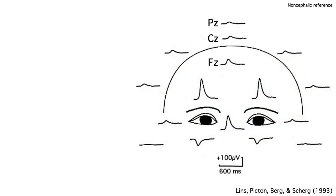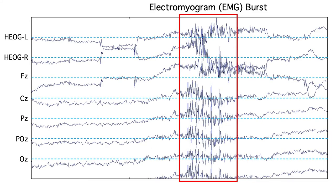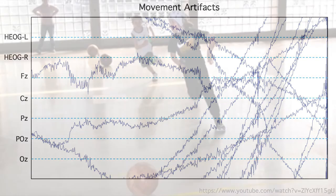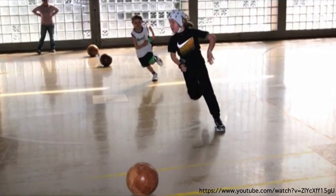The EOG is usually the largest source of artifacts in an EEG recording, but it's not the only source. Muscle contractions produce a large high-frequency signal called the electromyogram, or EMG. In an EEG recording, you mainly see EMG generated by the forehead muscles, the jaw muscles, and the neck muscles. If the subject doesn't sit still, you can also get large movement artifacts. As a result, most experiments require the subject to sit quietly in a comfortable chair. Recently, people have started recording ERPs while subjects move around in natural or virtual reality environments, but they have to deal with a ton of artifacts.